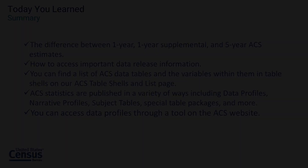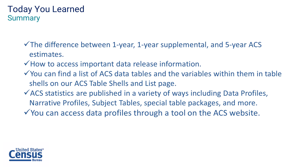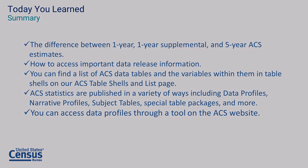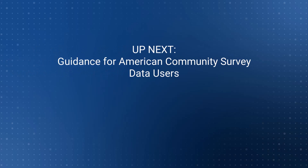Here is what you've learned today. You learned the difference between one-year, one-year supplemental, and five-year estimates, and where to locate data release information. You learned that you can find a list of ACS data tables and profiles and the variables within them in the table shells on our table shells and list page. You learned we package commonly needed statistics in a variety of products such as data profiles, narrative profiles, subject tables, special table packages, and more. You also learned how to access a data profile using a tool on the ACS website. Our next module covers ACS guidance for data users, which will provide an overview of important resources to help data users when comparing ACS estimates with the previous year's data and with census data. Thank you.